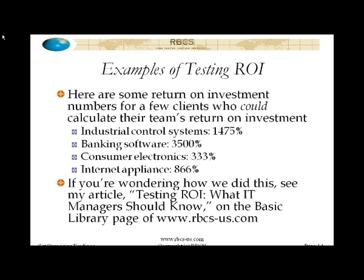There are other things that we could try to quantify. The banking application — this is the successful banking testing team I was talking about before — 3,500 percent. In other words, for every dollar spent, they saved $35. Now, you'd say banking makes sense because it's high risk, and that's absolutely true. When you start talking about things that are high risk, the cost of external failure is extremely high, which does indeed magnify the return on the testing investment.